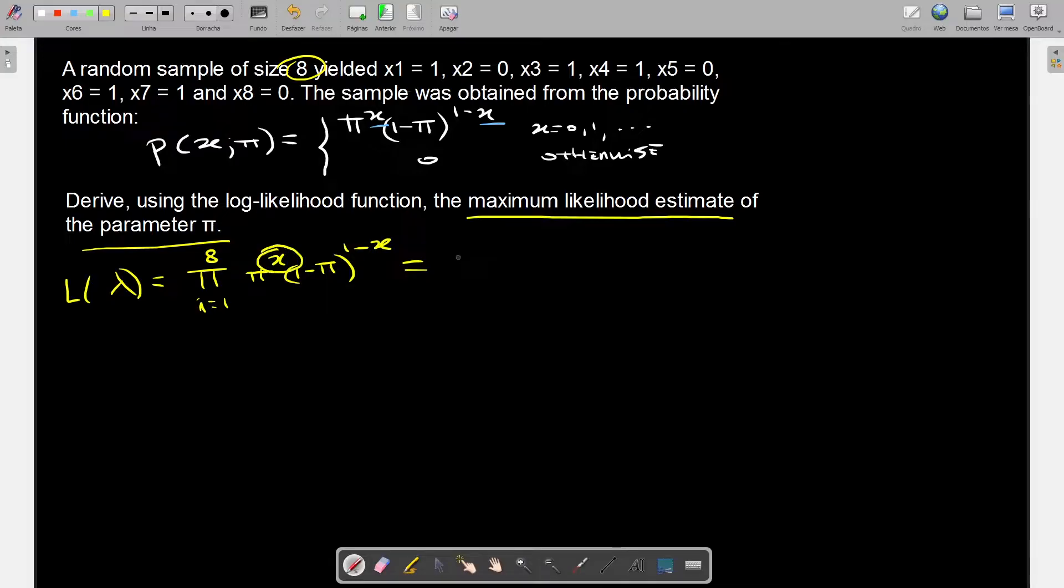Every time that you have an x it changes to a summation. So pi equals the estimation from 1 to 8, and I'm going to get it x y because it's from 1 to 8. And this counts as the number of successes. So this is 1 minus pi, which is the number of failures.